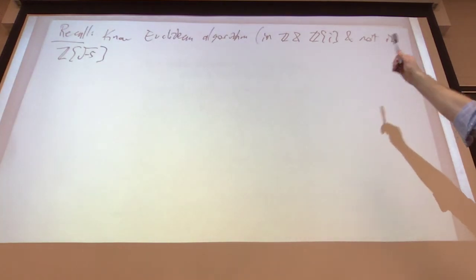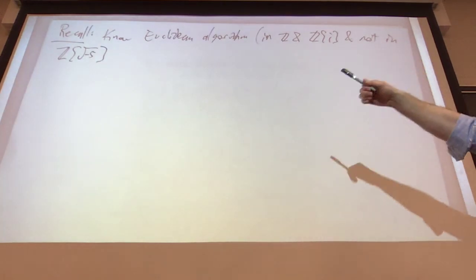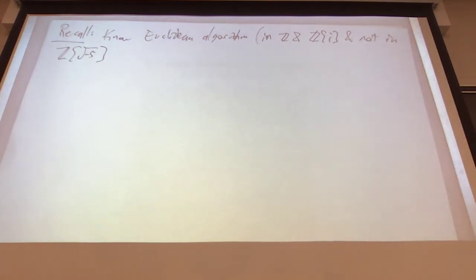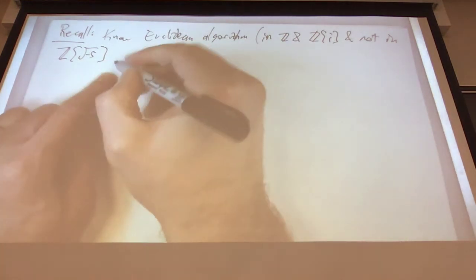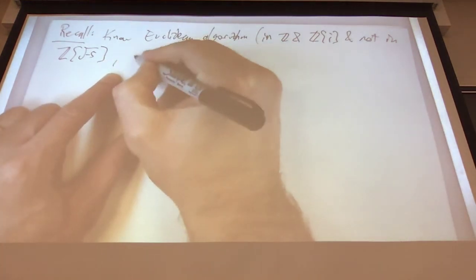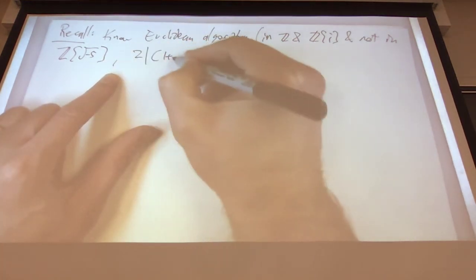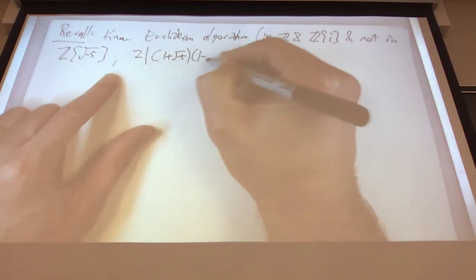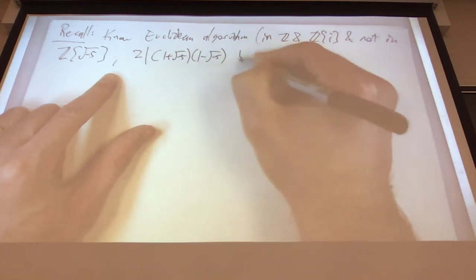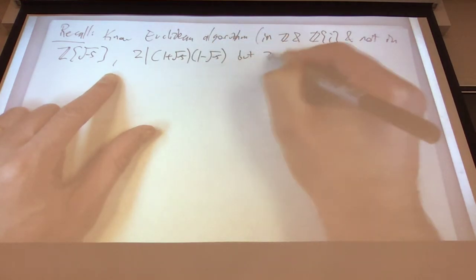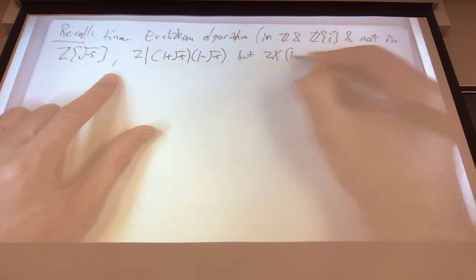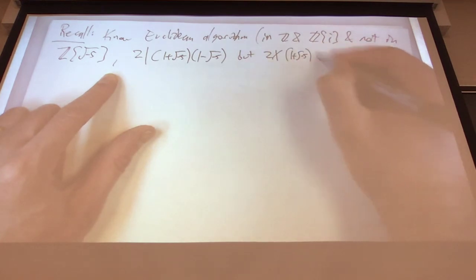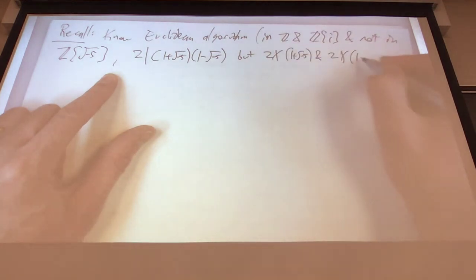The Euclidean algorithm works in the integers and the Gaussian integers, but not in this ring. This is our field where 2 divides (1 + √-5)(1 - √-5), but 2 does not divide 1 + √-5, and 2 also does not divide 1 - √-5.